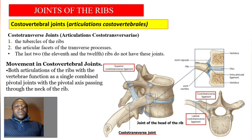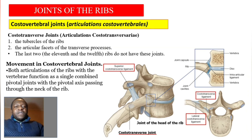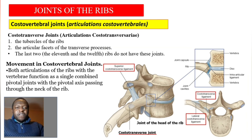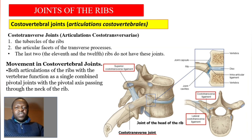The movements in the costovertebral joints: both articulations of the ribs with the vertebrae function as a single combined pivotal joint, with the pivotal axis passing through the neck of the rib.